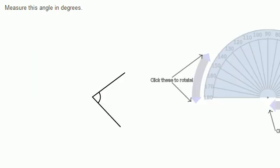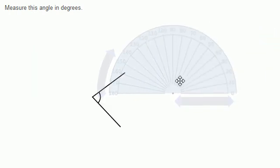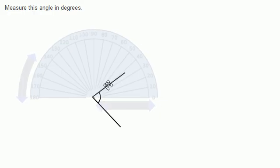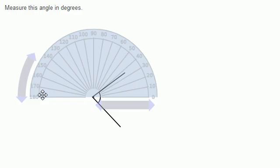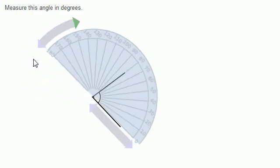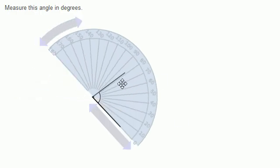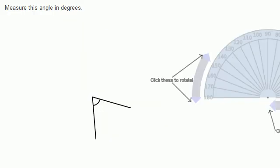Let's do a couple more of these. Once again, put the center of the protractor at the vertex of our angle. Now I want to rotate it. This looks like roughly an 80 degree angle — not quite. If I had to be really precise, it looks like it's maybe 81 or 82 degrees, but I'll just go with 80 as my best guess. I got the right answer.